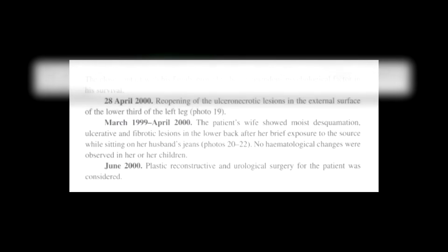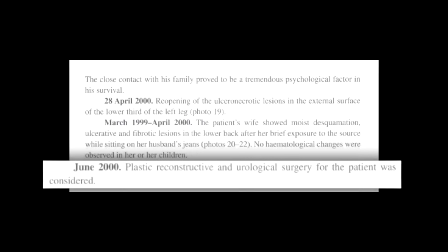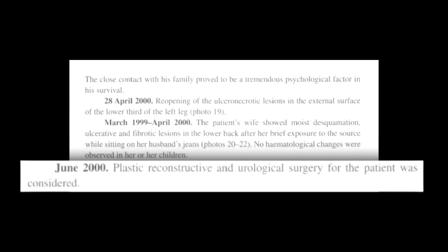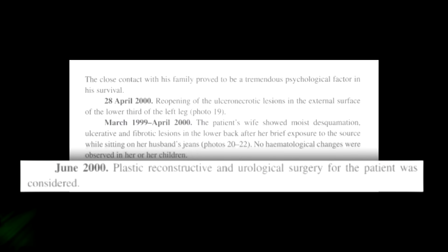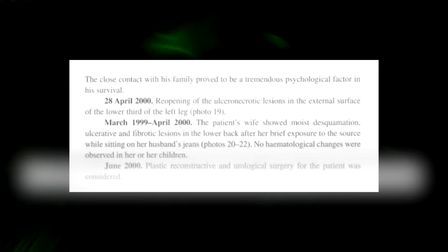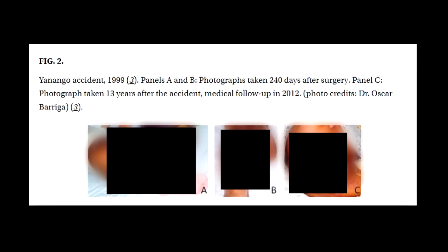Back in Peru the welder's condition continued to worsen with the necrosis of his perineum spreading outwards over his buttocks. They then became infected and left part of his pelvic bone exposed to the air. Necrotic lesions also started to appear on his left leg. I'll put a link to the report in the description, just scroll down near the bottom there's some pictures of his infected perineum and take a look at that because I definitely can't show it in this video. Now despite his critical condition the report states that the close contact with his family proved to be a tremendous psychological factor in his survival. The report ends saying June 2000 plastic reconstructive and urological surgery for the patient was considered and there's no further mention of his condition in the reports, but it was published in August of 2000 so it wasn't long after his stay in hospital. It also doesn't mention his name so I can't find out much more information about him. There is however a photo of the same man taken 13 years after the incident which means he lived at least until 2012 and I can't show those pictures either sorry.